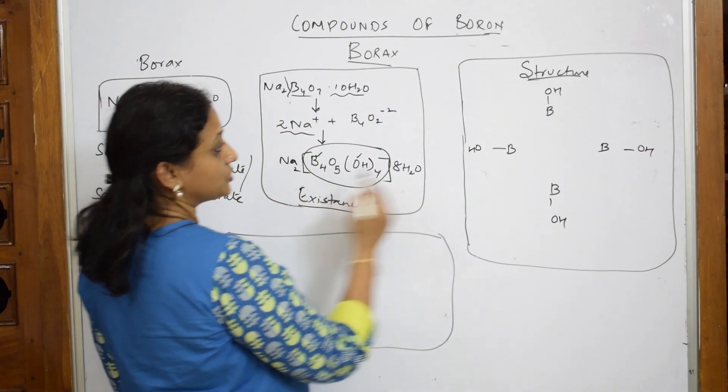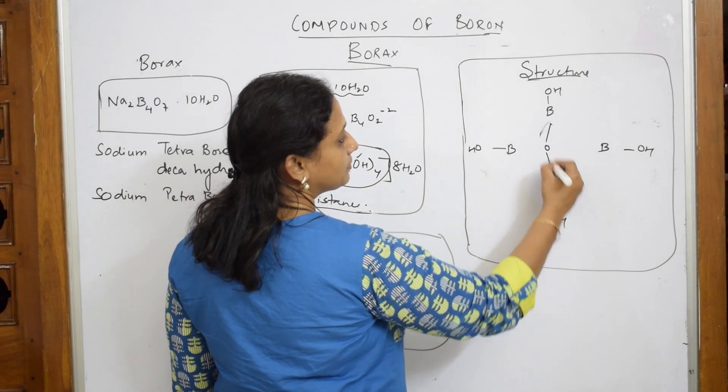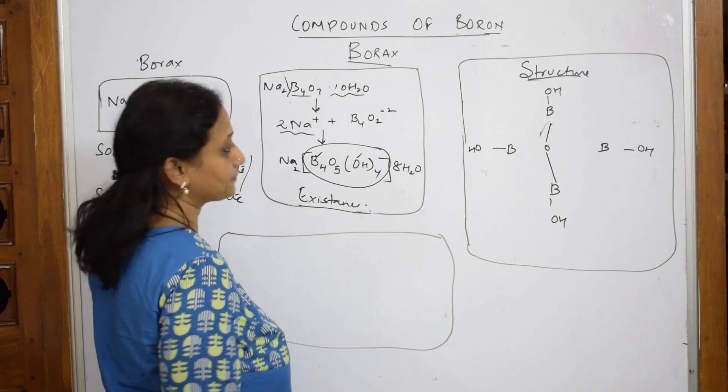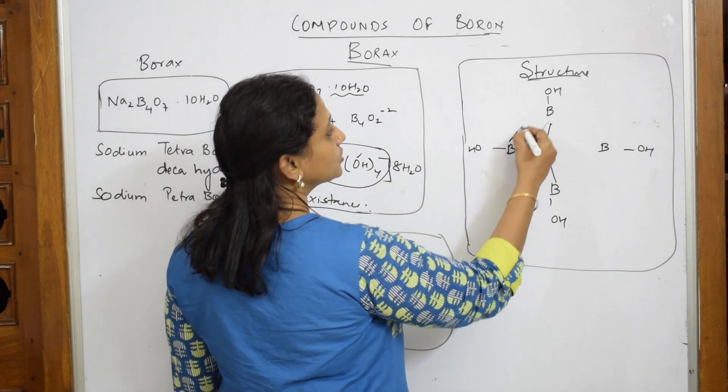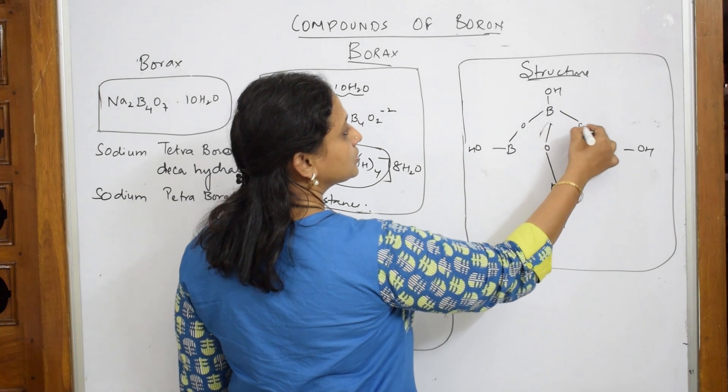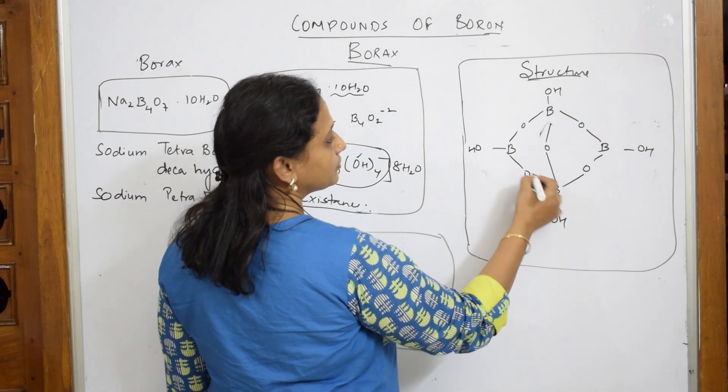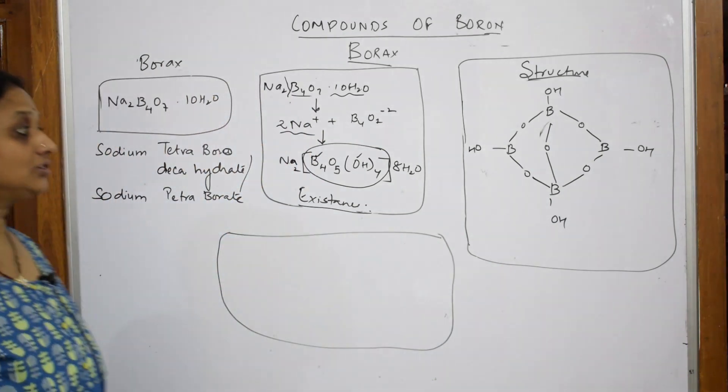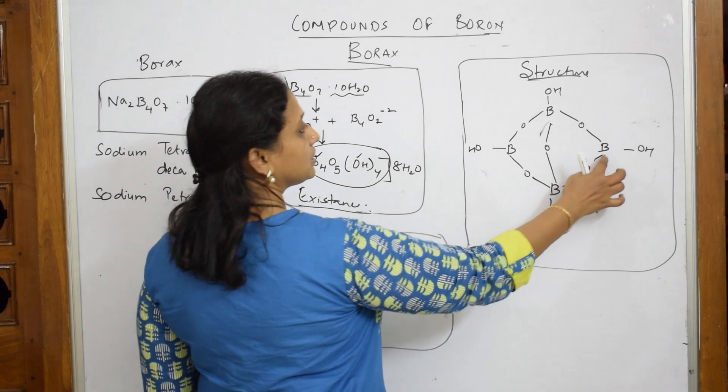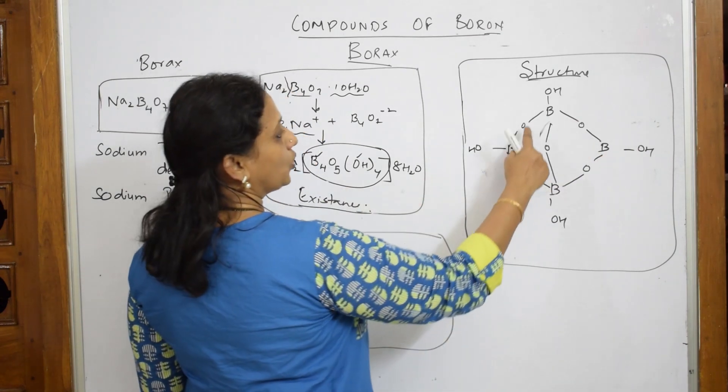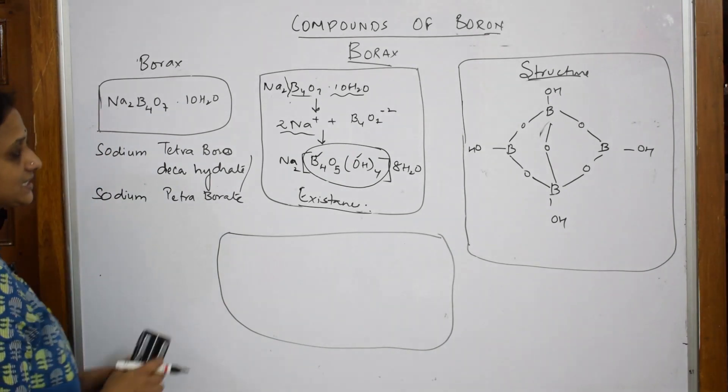Now you have to mention the oxygens. One forms a bridge. Exactly like this. A bridge between and what's leaking. Now how many are there? You have 4 more. So 1, 2, 3, and 4. That's it. This is your borax structure. B4, O5, OH4. Done.